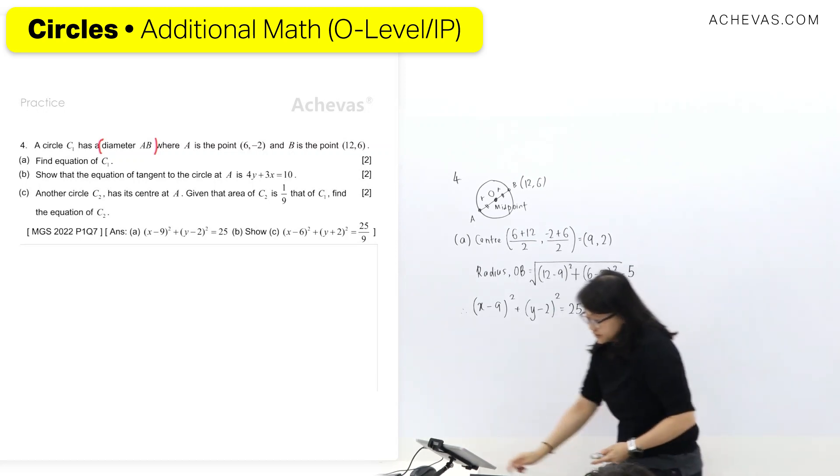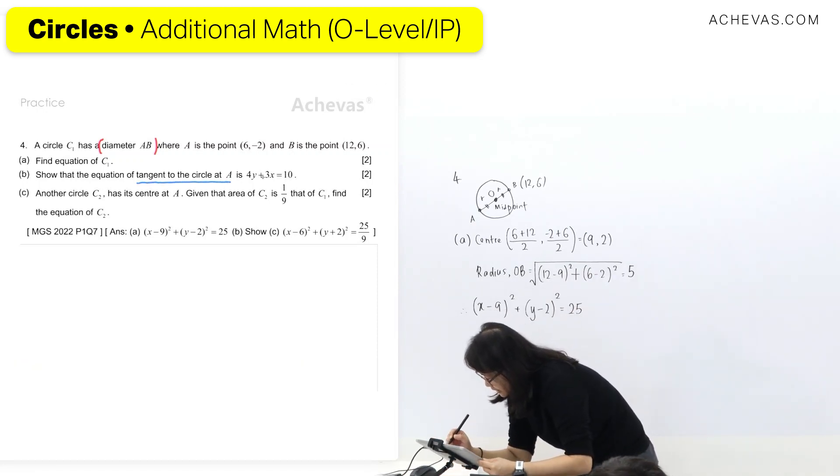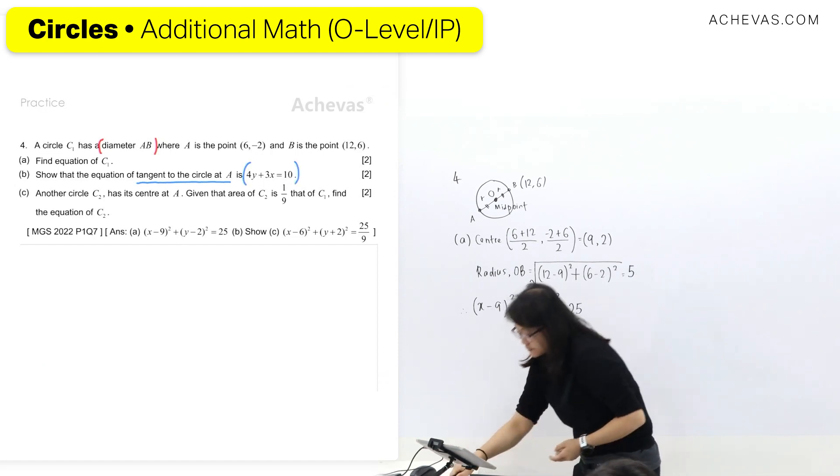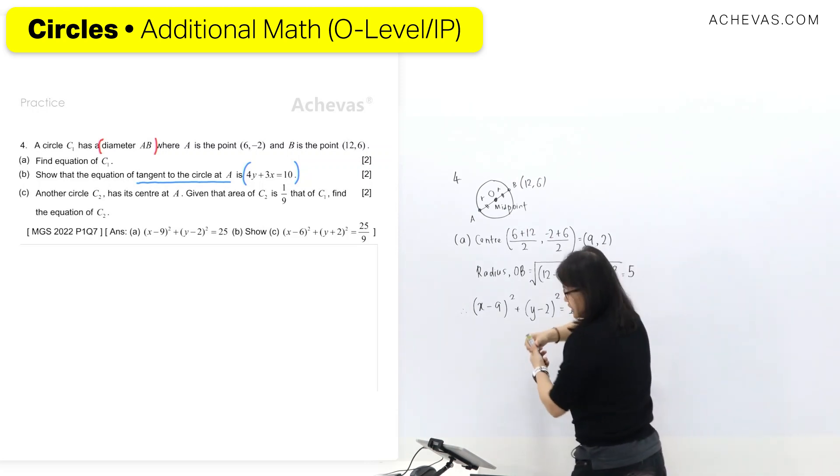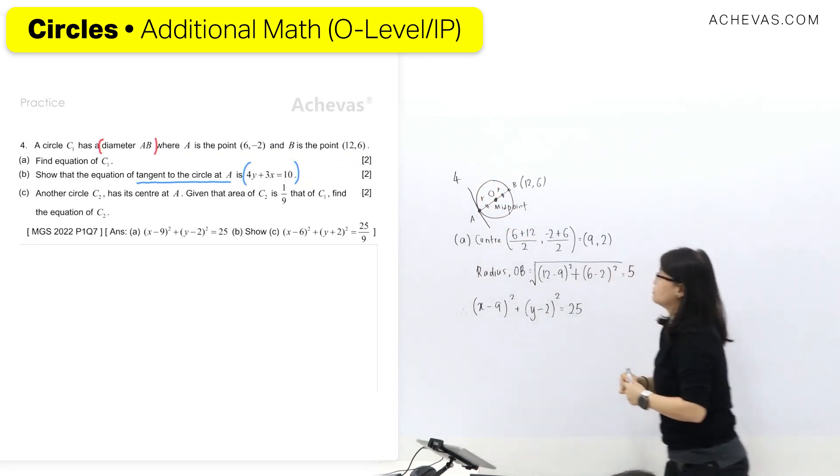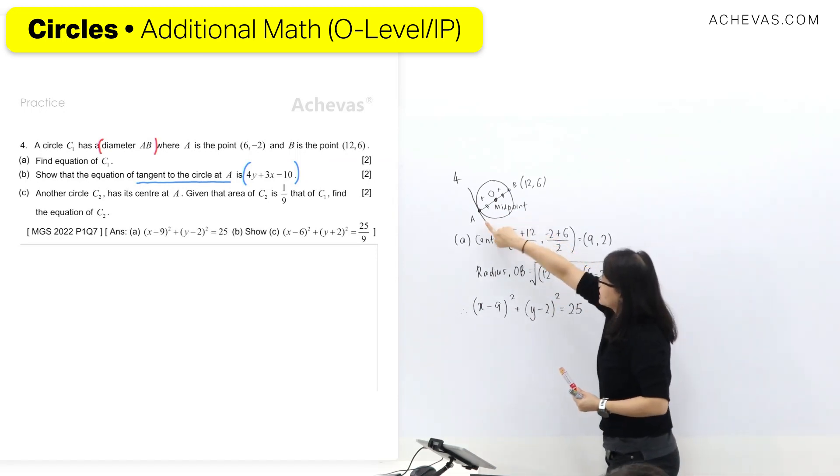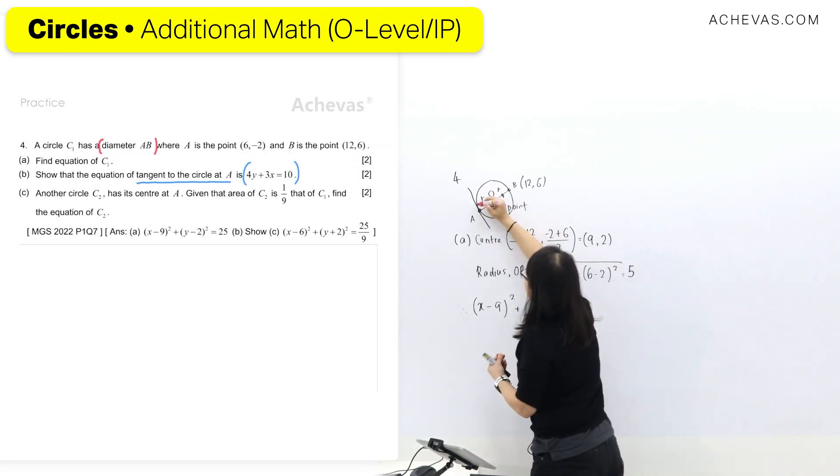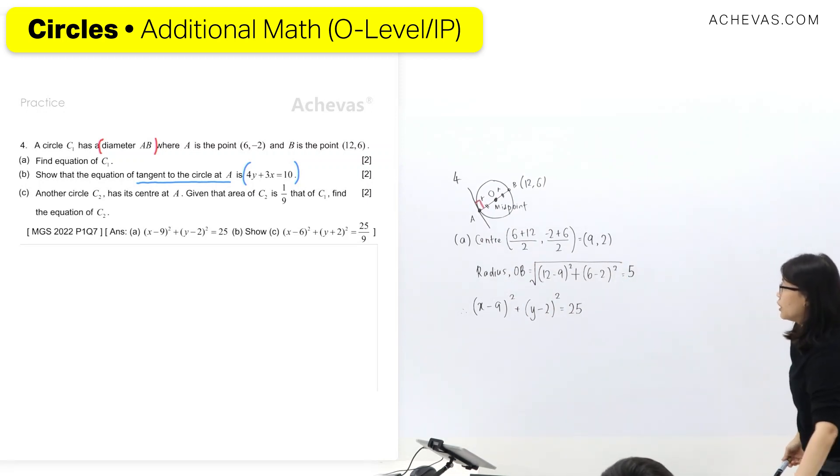So next question, this one, tangent to the circle at A. What you can see here, if I'm going to find tangent to a circle, I draw. Remember my diagram is not following, I just sketch. I didn't really bother where is the coordinates. I just want to see tangent is this line here touching A, which means you need to know that this one is 90 degrees to the radius.